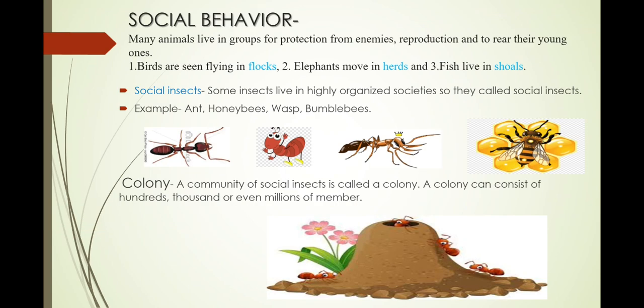Social behavior. Like human beings, many animals live in groups. Animals live in groups for protection, for enemies, reproduction and to rear their young ones. Birds are seen flying in flocks. Elephants move in herds and fish live in schools. Some animals are social animals.